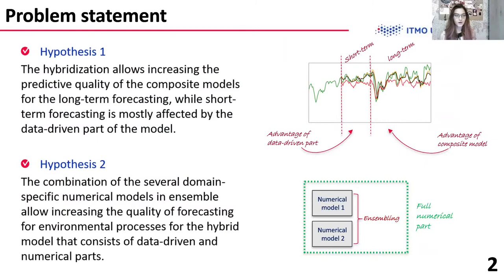Using the complex machine learning approach, we would like to look at two hypotheses. The first is that optimization allows increasing the predictive quality of composite models for long-term forecasting, as demonstrated in the image on the right. For short-term forecasting, the most advantage is the ensemble part. The second hypothesis is that combining several domain-specific physical-based models using ensembling can give more prediction quality in combination with machine learning than using only one model or each model separately.